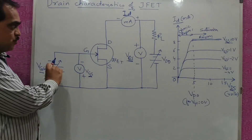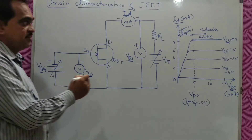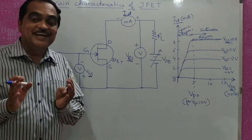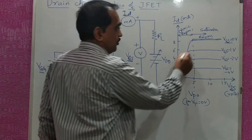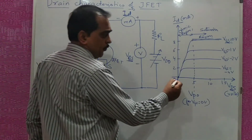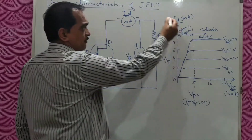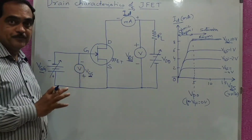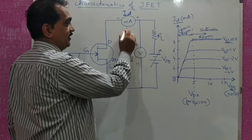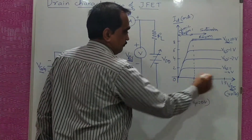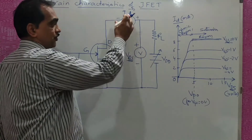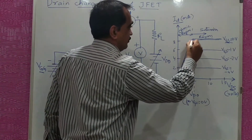As you increase the VGS, the depletion layer of both the PN junctions will increase and the channel width will go on decreasing, so the current decreases. The curve is plotted for different values of VGS and ID by keeping a constant value of VGS, then varying the output voltage in steps and noting down both VDS and ID — for example 0.5, 1.0, 1.5 V giving 2 mA, 4 mA, 6 mA — to get each curve when VGS equals 0.